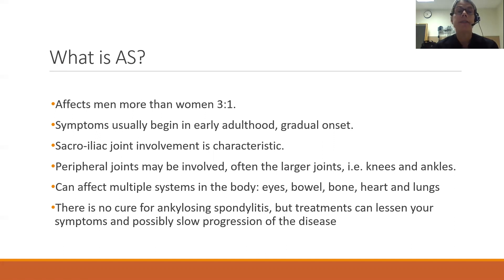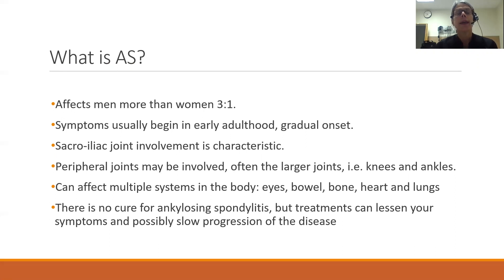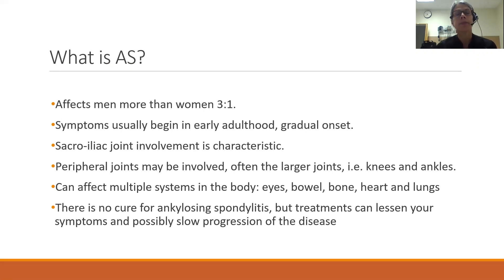Ankylosing spondylitis affects men more than women in a three to one ratio. Symptoms usually begin in early adulthood with a gradual onset. Sacroiliac joint involvement is characteristic, but peripheral joints may also be involved — usually the larger joints of your lower body including knees and ankles. Due to the systemic nature of this condition, it can affect your eyes, bowel, bone, and more rarely heart and lungs. At present we do not have a cure for ankylosing spondylitis, but available treatments can lessen your symptoms and slow the progression of the disease.